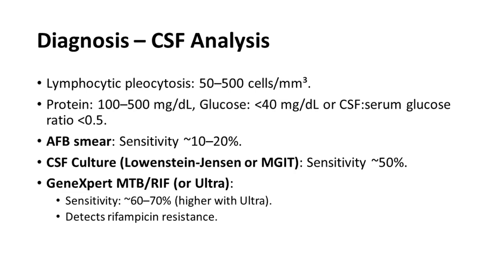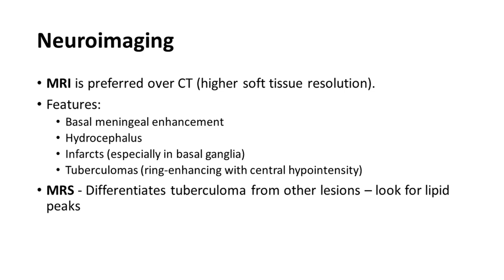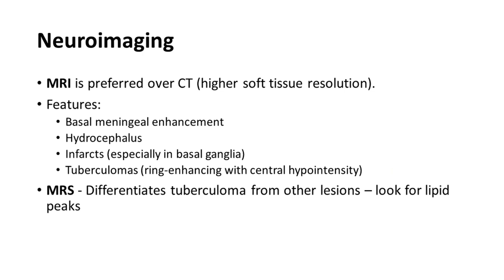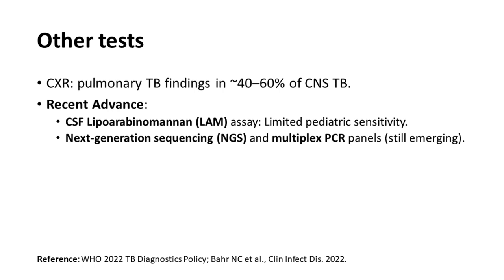Among neuroimaging, MRI is always preferred over CT because of higher soft tissue resolution. On MRI you will see basal exudates, hydrocephalus, infarcts, and tuberculomas. If you pick up a child with tuberculomas and are unsure whether it is neurocysticercosis or another ring-enhancing lesion, MR spectroscopy may help — look for lipid peaks in tuberculomas. Always look for pulmonary involvement, as 40 to 60 percent of CNS TB cases have lung involvement. Gastric lavage or stool GeneXpert can be used if CSF GeneXpert is negative.